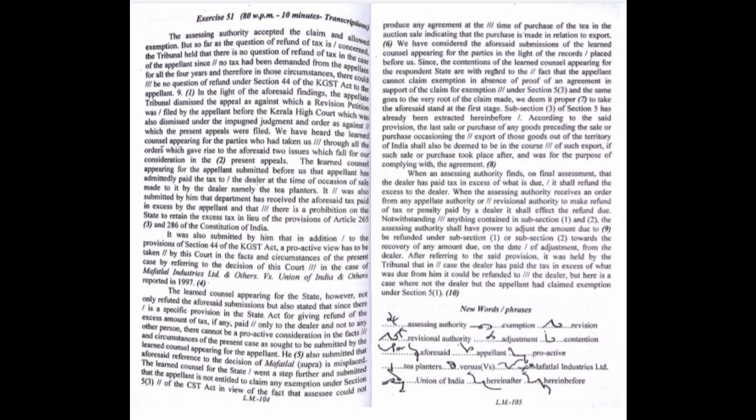In the light of the aforesaid findings, the appellant tribunal dismissed the appeal, as against which a revision petition was filed by the appellant before the Kerala High Court, which was also dismissed under the impugned judgment and order, as against which the present appeals were filed.